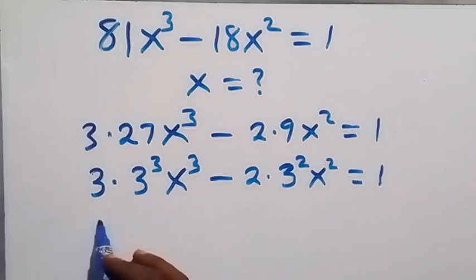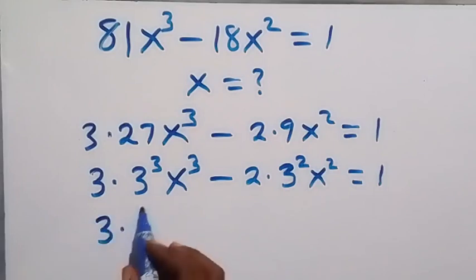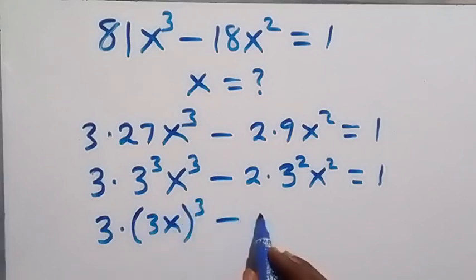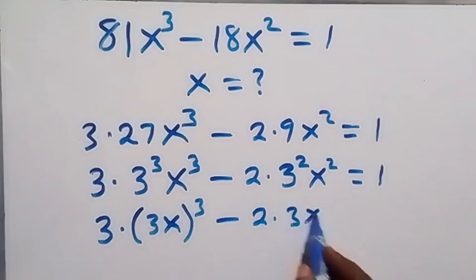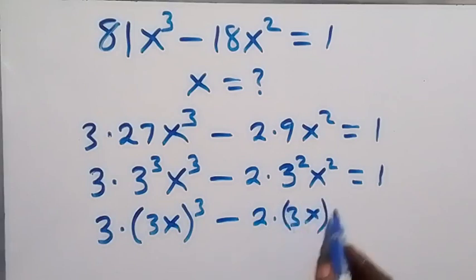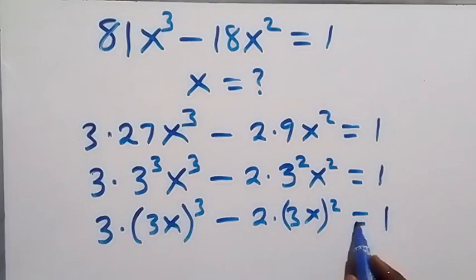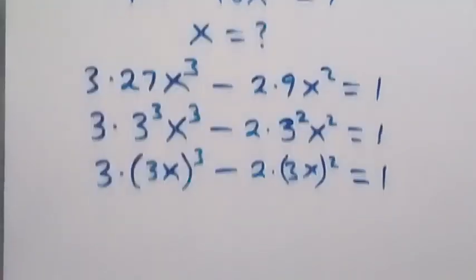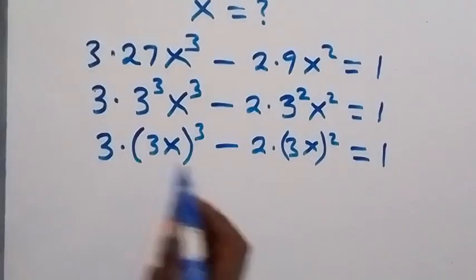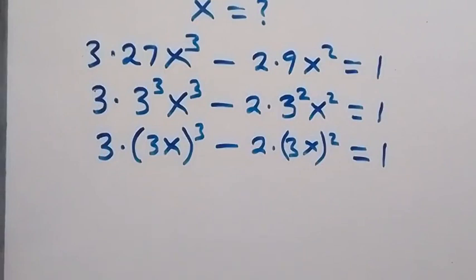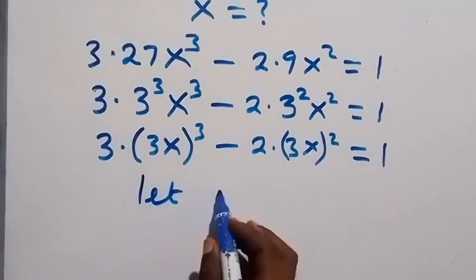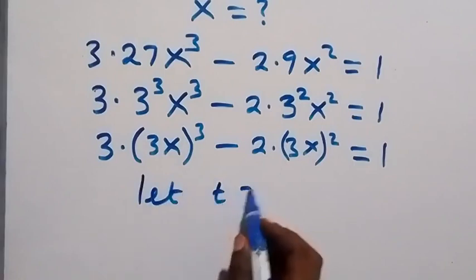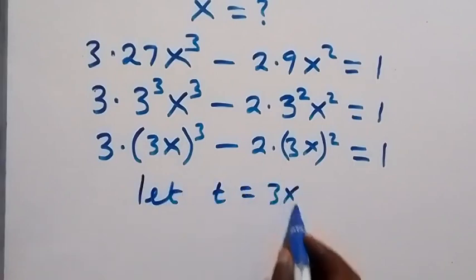From the law of indices, we can write the same powers together. This gives us 3 times (3x) raised to power 3, then minus 2 times (3x) raised to power 2, which equals 1. Now 3x is common, so let t equal 3x.